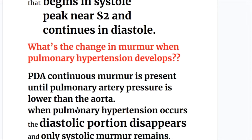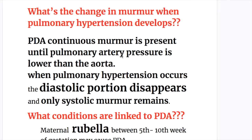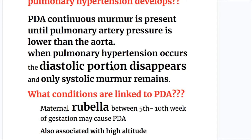The PDA continuous murmur is present as long as pulmonary pressure is lower than aortic pressure. When pulmonary hypertension occurs, the diastolic portion of the murmur disappears and only the systolic murmur remains.